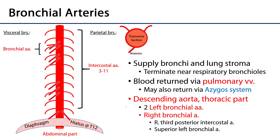The bronchial arteries are going to be branches typically of the thoracic part of the descending aorta. Recalling our portions of the aorta: we have the ascending aorta, the arch of the aorta, and then the descending aorta, which has a thoracic part — everything superior to the diaphragm — and below the diaphragm the abdominal part. That thoracic part typically hosts two left bronchial arteries.